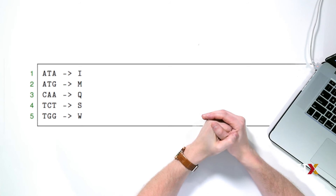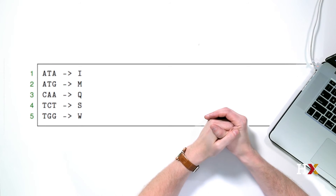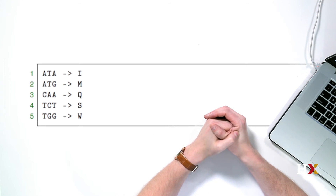Here is part of the table that we'll be using to do the translation. The actual table is longer than this. The input is shown on the left, and the output is shown on the right. In general, before you start writing any code, make sure you really understand the problem. Sometimes it's helpful to run through a simple example on a piece of paper before even thinking about the code itself.